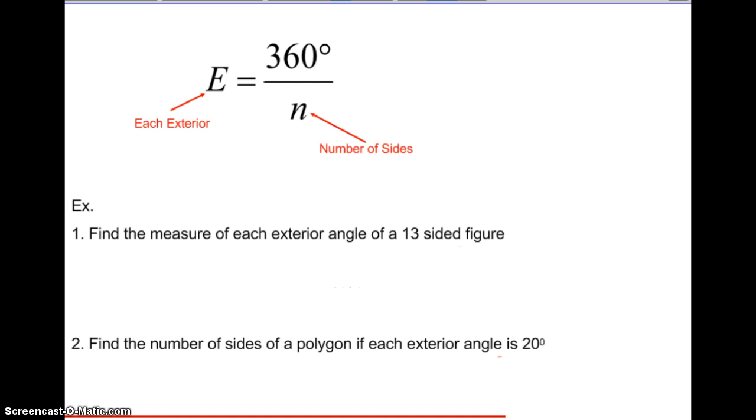All right, so now we have each exterior. So we need to take our sum and divide it by our number of sides, which is equivalent to the number of angles. So if we want to find the measure of each exterior angle of a 13-sided figure, we know n is 13. And so we find E, which is each exterior, by dividing 360 degrees into 13 parts. So that would be approximately 27.7 degrees.